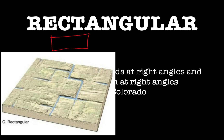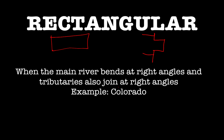For the rectangular drainage pattern, the main river bends at right angles and the tributaries also join the main river at right angles. This is the beauty of geography — it helps us appreciate the beauty of nature, as different river patterns form naturally. A classic example is the Colorado River, famously known in the U.S.